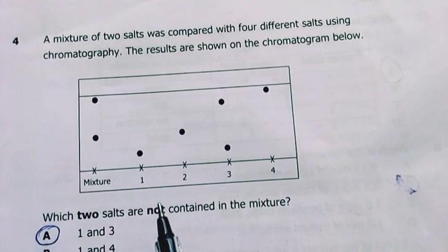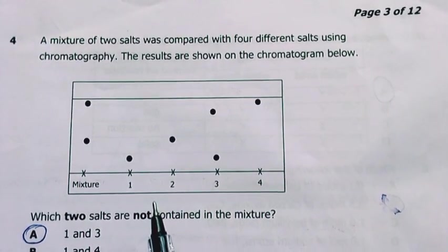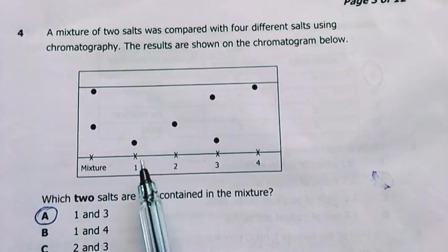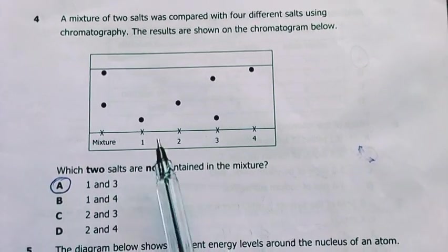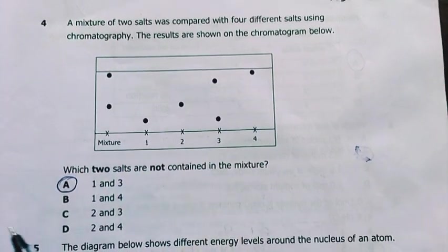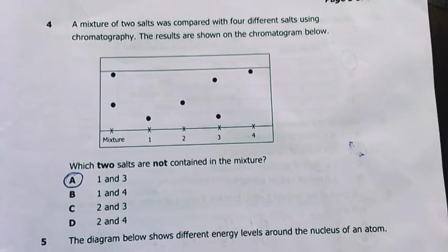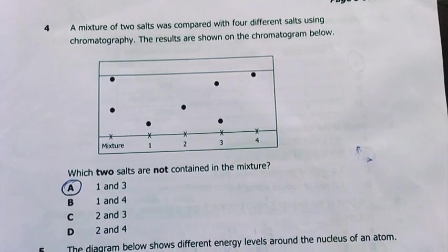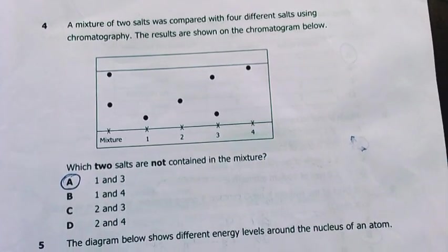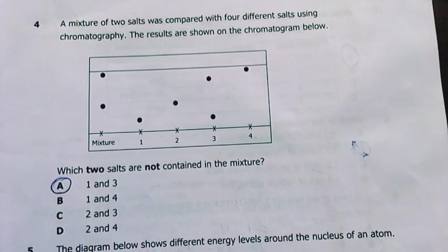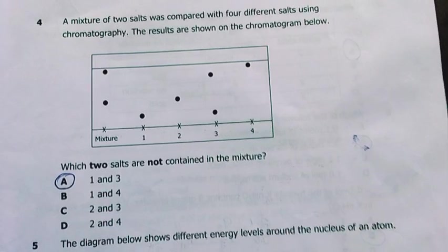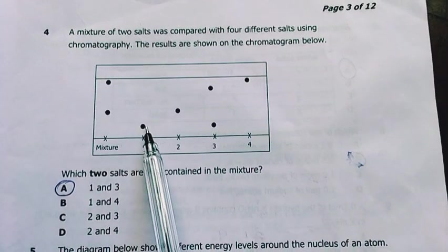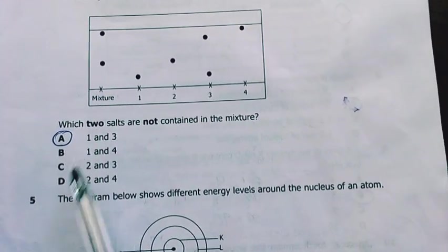Question four. A mixture of two sorts was prepared with four different sorts using chromatography. The results are shown in the chromatogram below. Which two sorts are not contained in the mixture? Understand that the level of the degree of solubility of every pure substance is unique to that substance. This one is the same as this, and this one is the same as that. So this one is not part of it, and this one is not part of it. It's 1 and 3. My answer is A.